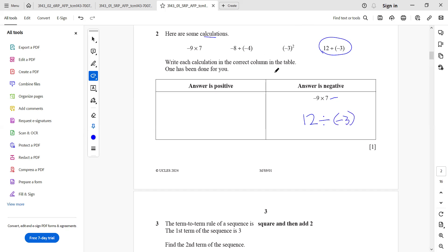And now the rest of the amounts are to be placed in answer is positive. Negative 3 whole squared is going to give us a positive answer. Similarly, negative 8 divided by negative 4 would give us a positive answer. This is how this question is to be done.